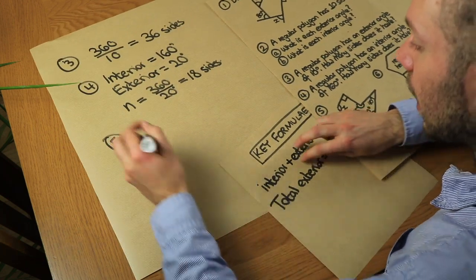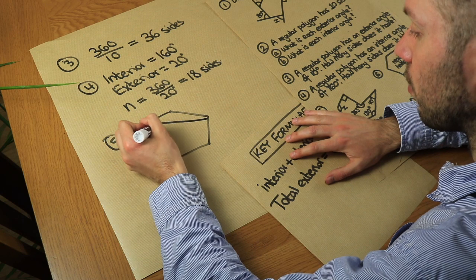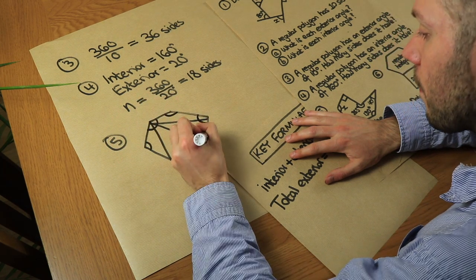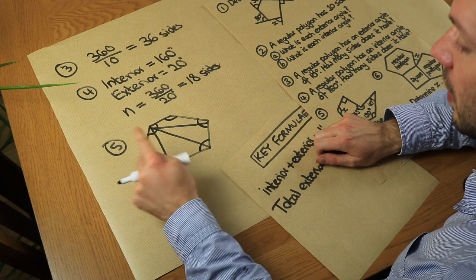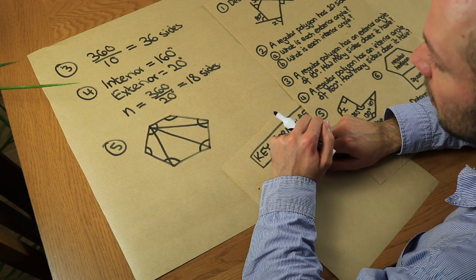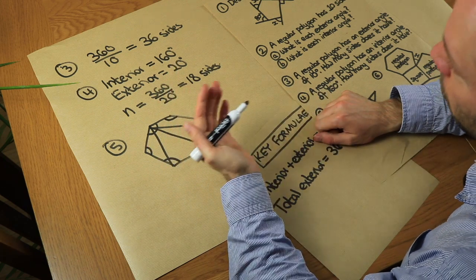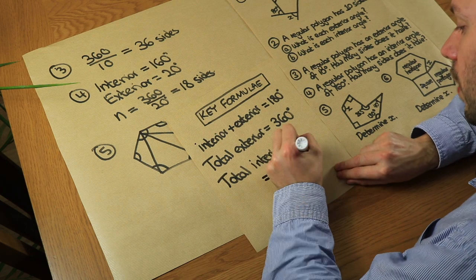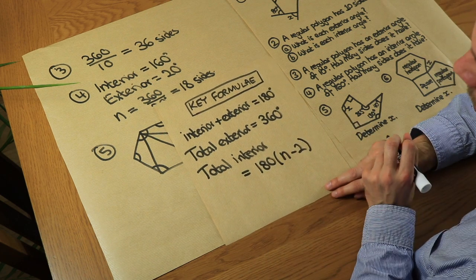Here's how it works. Take a hexagon and split it into triangles from one vertex. The interior angles of the polygon form the interior angles of those triangles. Since each triangle's interior angles sum to 180°, the total interior angle is 180° times the number of triangles. A hexagon splits into four triangles, giving 180 × 4 = 720°. In general, an n-sided polygon splits into (n − 2) triangles, so the total interior angle is (n − 2) × 180 degrees.